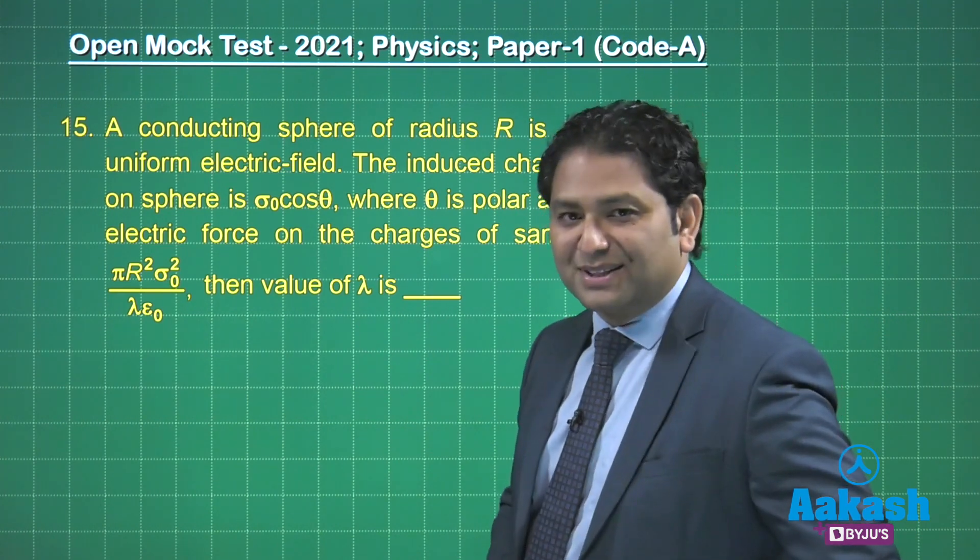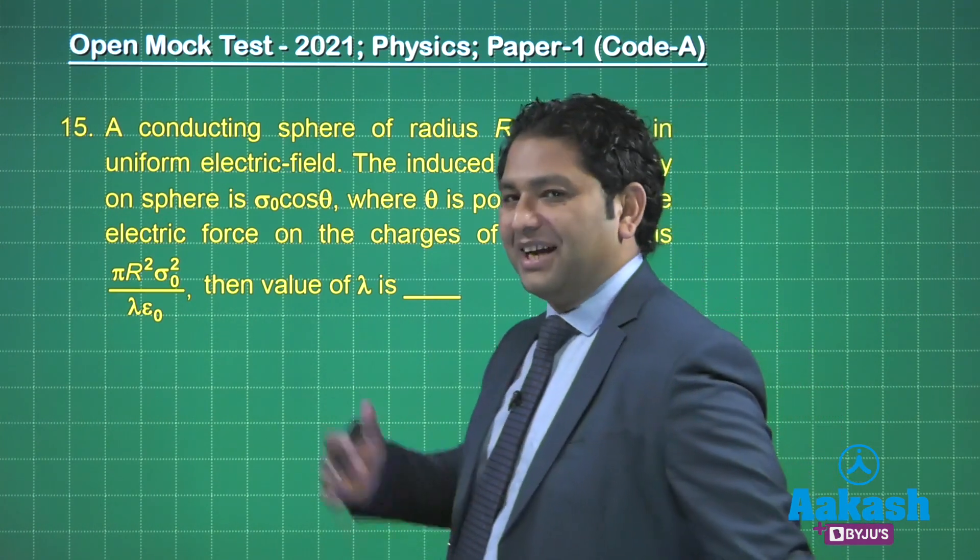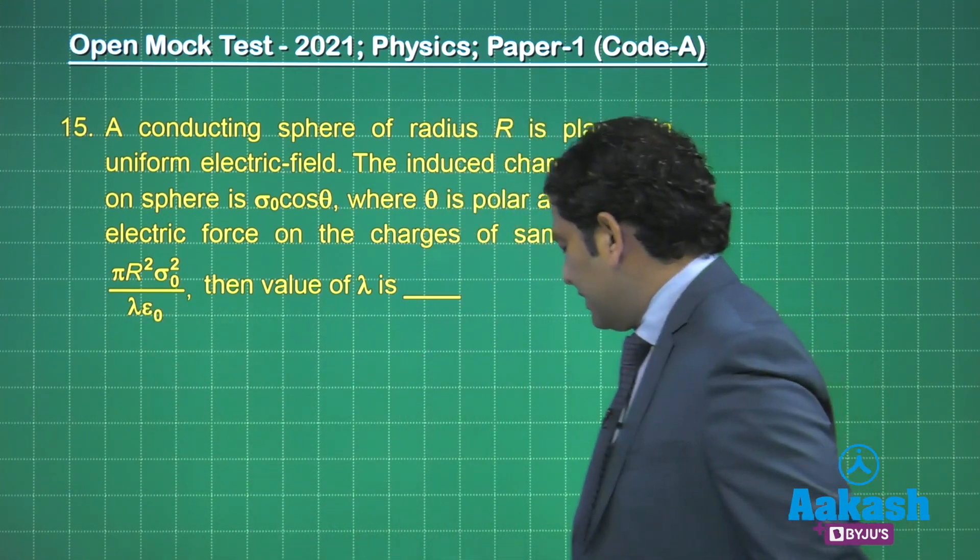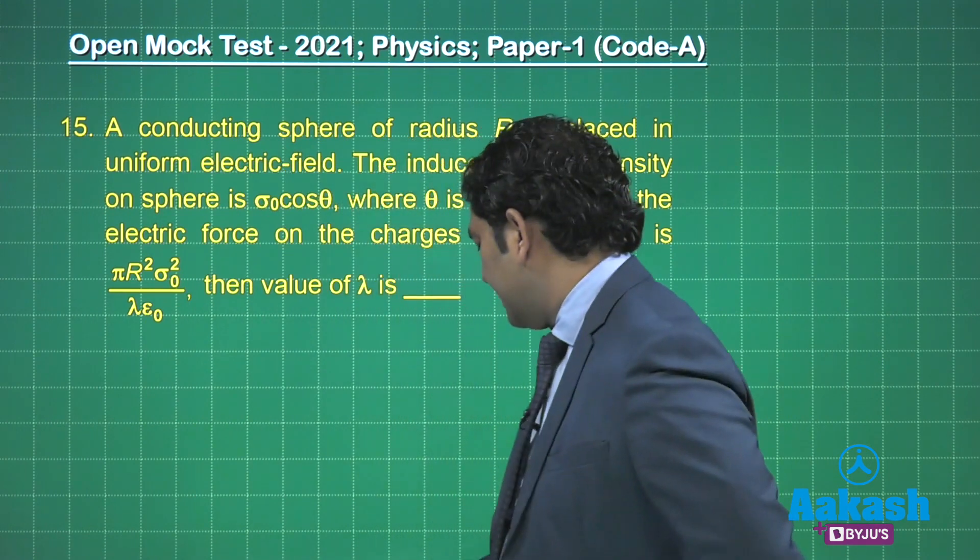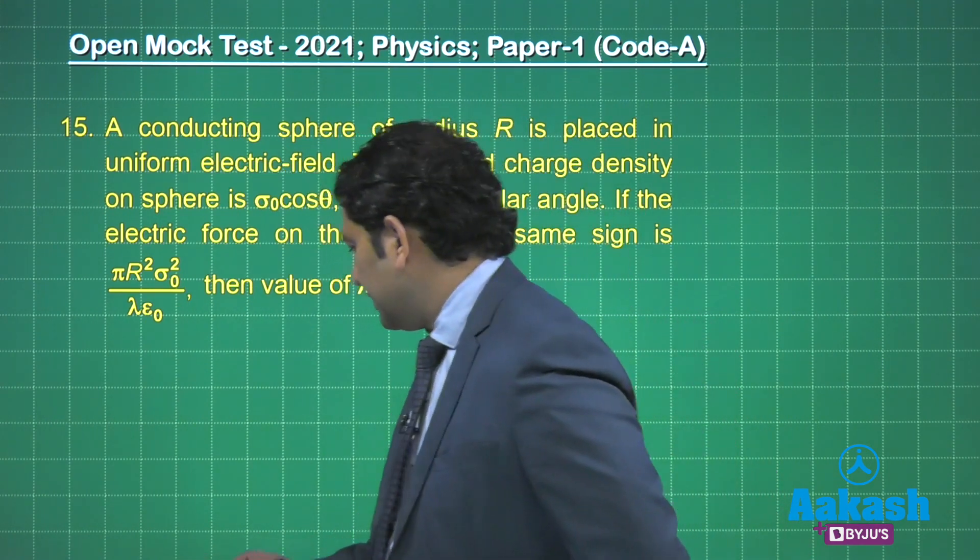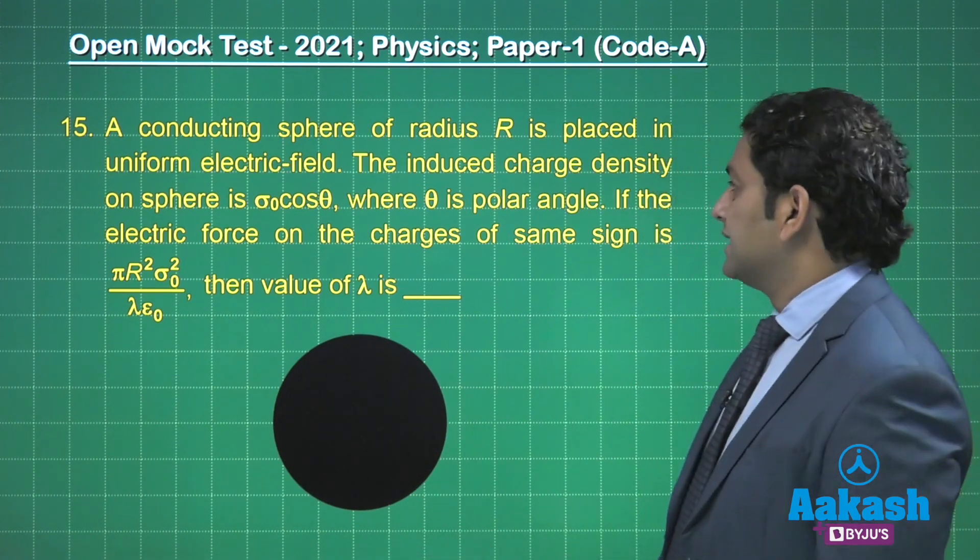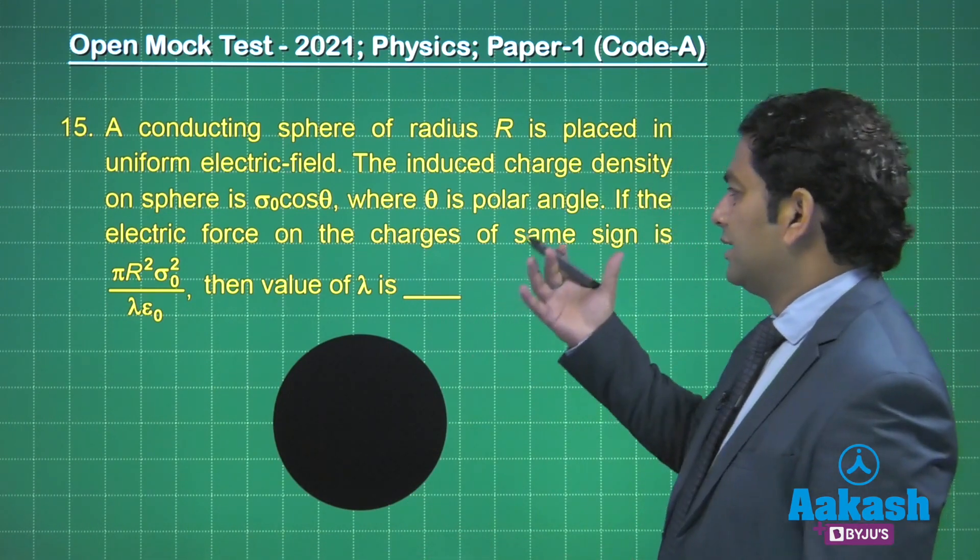Don't confuse - λ is not the linear charge density. We are trained in that way, but λ is a numeric value. What do we require? The first thing we require is a figure.